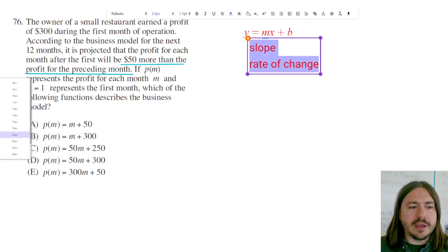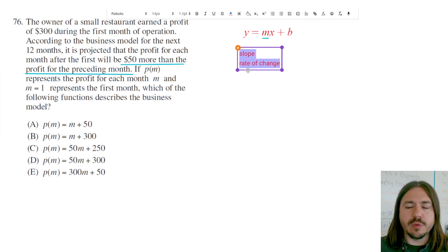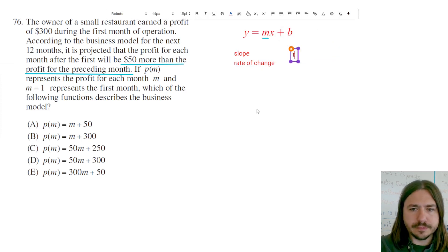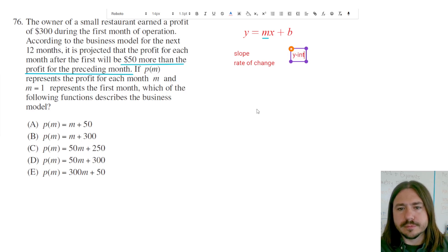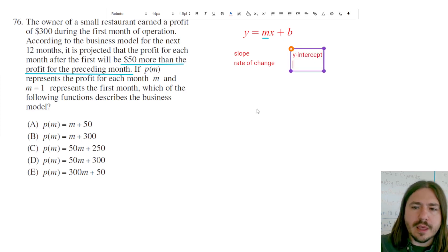The b in this equation represents the y-intercept. Another way of thinking about the y-intercept is it's the value of the function when x is zero.